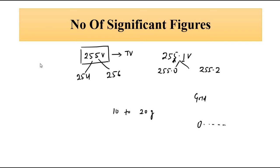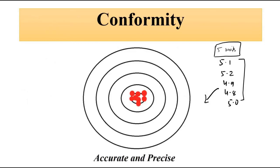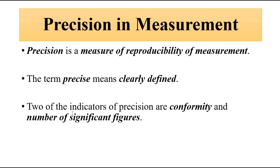The two important things associated with precision — which is related to reproducibility, the closeness of output readings — are conformity, which involves accuracy and consistency, and number of significant figures. These are all very important when defining precision of measurement or the precision of a measurement device.